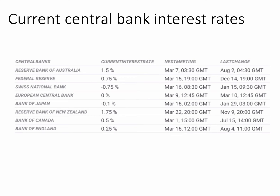Here are some current central bank interest rates around the world. You can see, for example, the UK policy rate as of February 2017 is 0.25%. In the United States it's 0.75%. It's zero in Europe, set by the European Central Bank. But notice that the Bank of Japan sets negative policy interest rates at minus 0.1%, and the Swiss National Bank sets an interest rate of minus 0.75%. These are, of course, nominal interest rates, but negative.